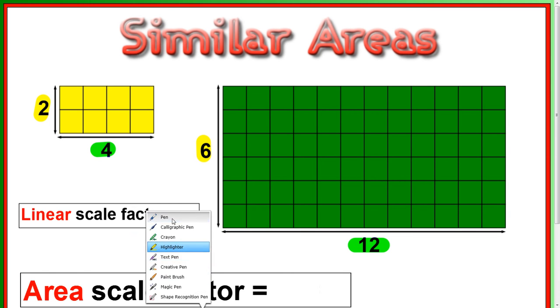We're trying to investigate what happens to the area. Area is length times breadth. So 2 times 4 gives you 8 here. Now, if the area tripled, then this area should be 24. However, we can see this area is not 24, because 6 times 12 is 72.